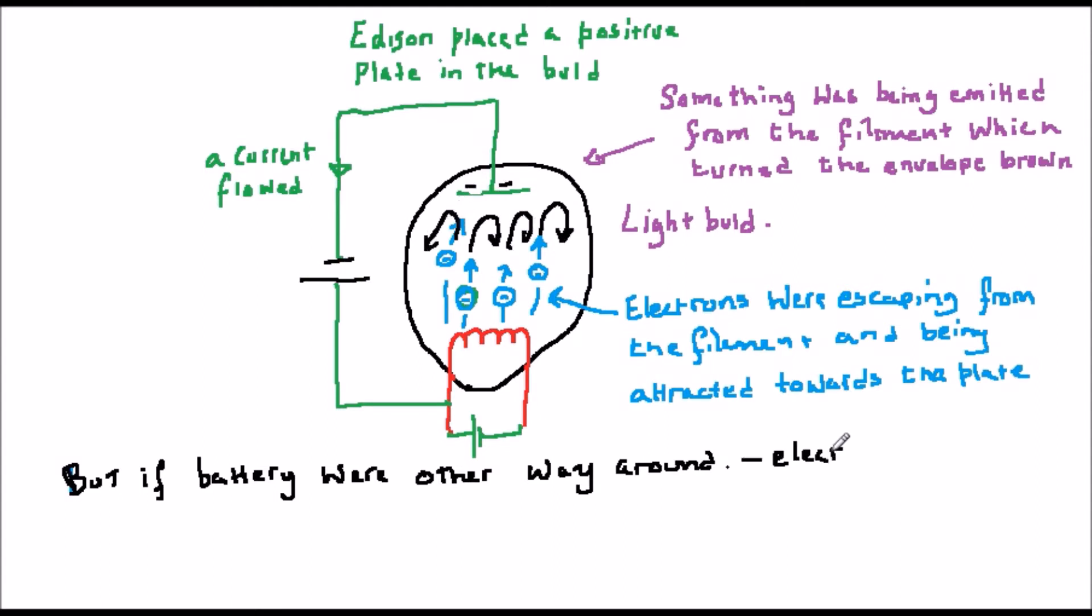Hence the diode action described in the first video. The device allows electricity to be conducted when the battery is one way round but not when it is the other way.